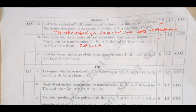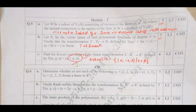Find the kernel and range of the linear transformation T: ℝ³ → ℝ² defined by T(x, y, z) = (x + y, z). The kernel of T is the set of all (x, −x, 0) such that x belongs to real values. The range is x + y + z — that is the range of the given transformation.